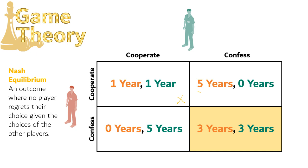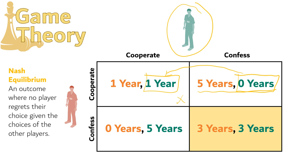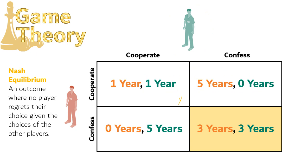What about this outcome here? Does either player regret their choice? We can look at player B and see that now they're getting zero years. If they change their choice, they would get one year in prison, and that's worse. So player B does not regret their choice. But player A is getting five years in prison. If they change their choice, they would have chosen confess instead of cooperate and would have gotten three years instead of five. So player A does regret their choice, and so this one is also not a Nash Equilibrium.